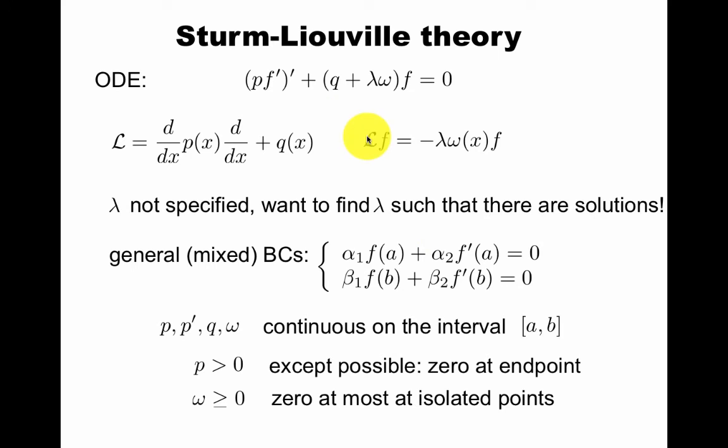Notice here that lambda was not specified. Lambda is an unknown constant. We want to find lambda such that there are solutions. In the case of the Legendre polynomials, it was something like integers times integer plus one. So that's something you come up with at the end, roughly speaking, of this procedure.